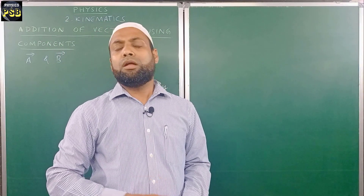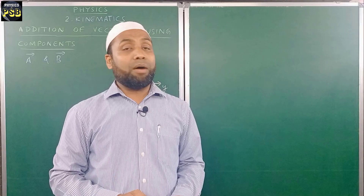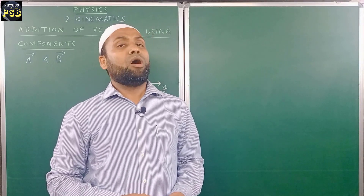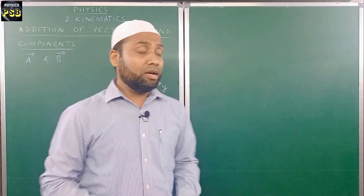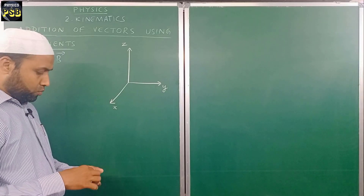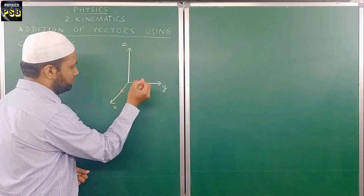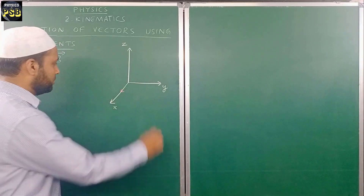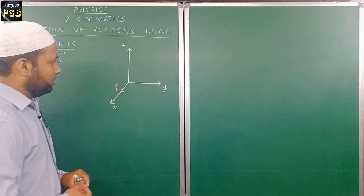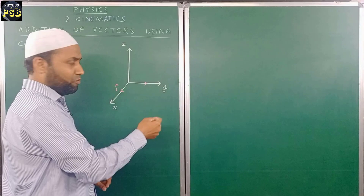Now, in the types of vectors we discussed about orthogonal vectors. Orthogonal vectors are those which act along these axes — perpendicular to each other. The orthogonal vector which acts along the x-axis is nothing but i-cap. It is a kind of unit vector. The orthogonal vector which acts along the y-axis — the unit vector along the y-axis — is j-cap.